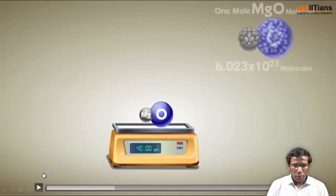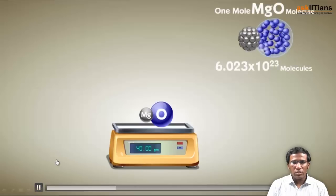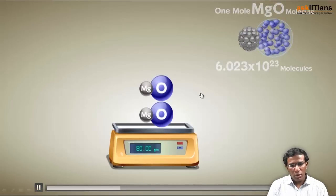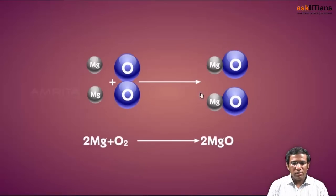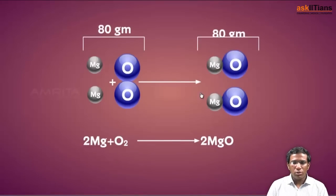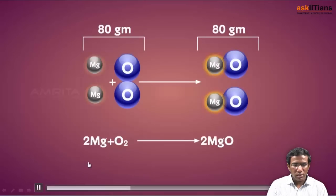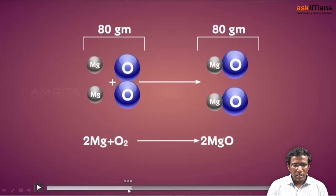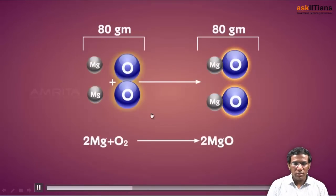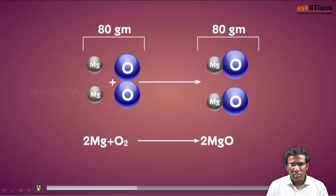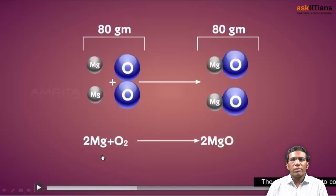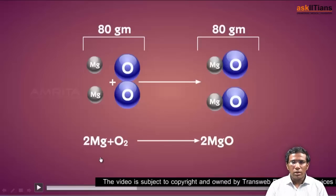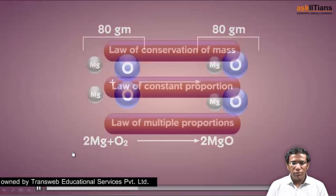The product is MgO. One mole of MgO weighs 40 grams, but we have two moles, so the total mass of the products is 40 + 40 = 80 grams. The mass of the reactants is 80 and the mass of the products is also 80. The number of magnesium atoms and oxygen atoms on the left equals the right hand side, confirming that mass cannot be created or destroyed — the total mass of reactants always equals the total mass of products.